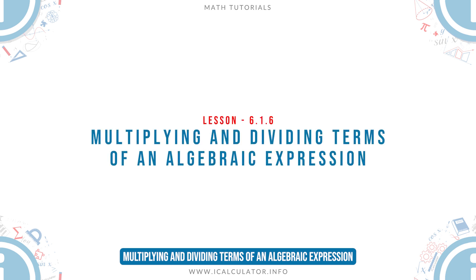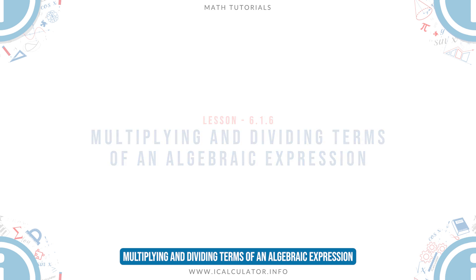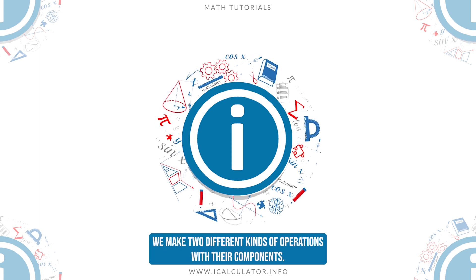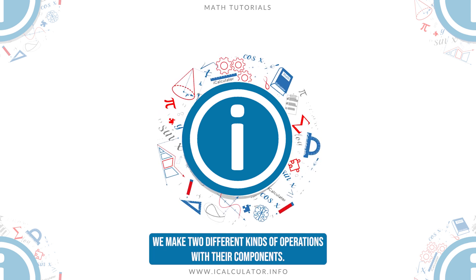Multiplying and Dividing Terms of an Algebraic Expression. If two or more terms of an algebraic expression are multiplied or divided, we make two different kinds of operations with their components.